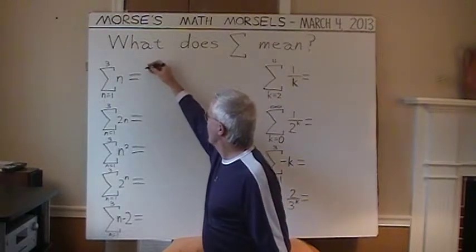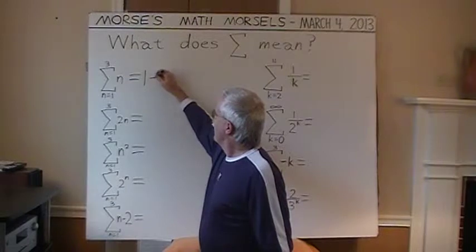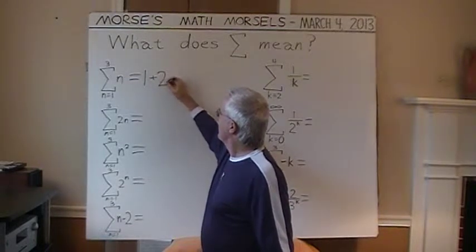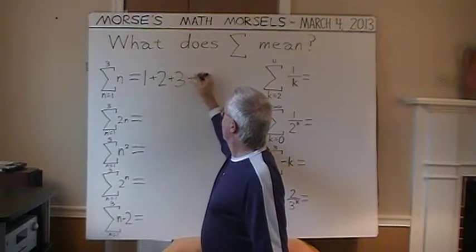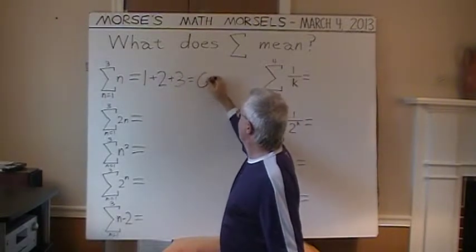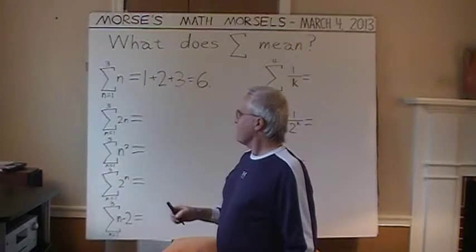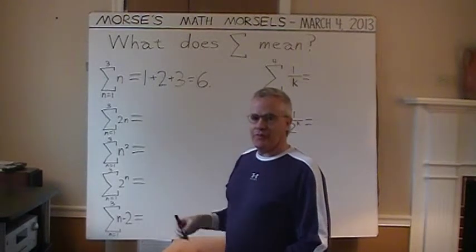So I start at N equals 1. And then add the next whole number, 2, and then finally the 3, which is the ending point. And that's just as easy as 1 plus 2 plus 3, 6. So that's all that Summation was.